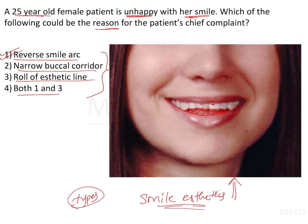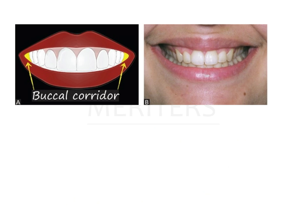A narrow buccal corridor appears as the space between the posterior teeth and the buccal musculature — marked in yellow here. When there is a narrow maxillary arch, excess dark space appears between the posterior dentition and the cheek musculature. These dark buccal corridors appear very unaesthetic and can be corrected by arch expansion.